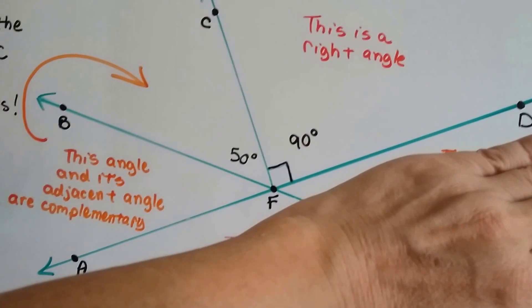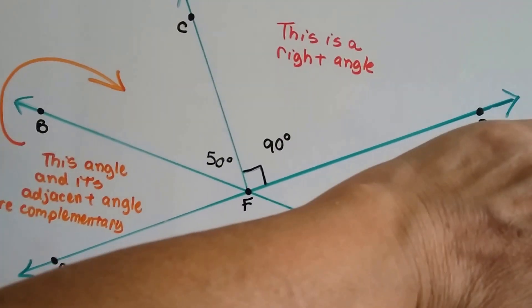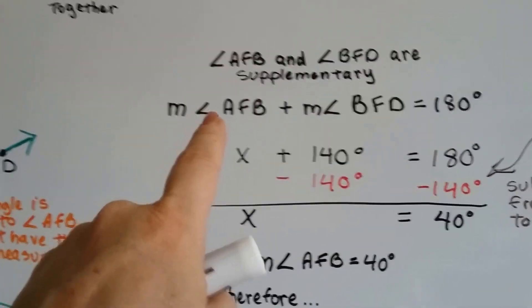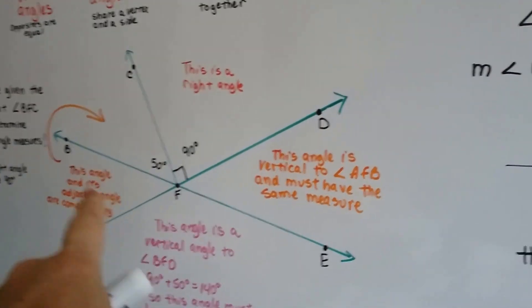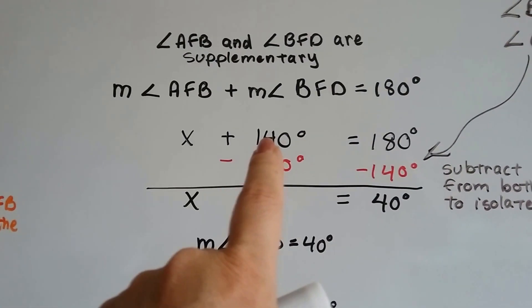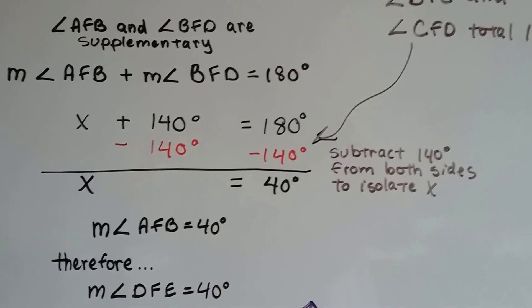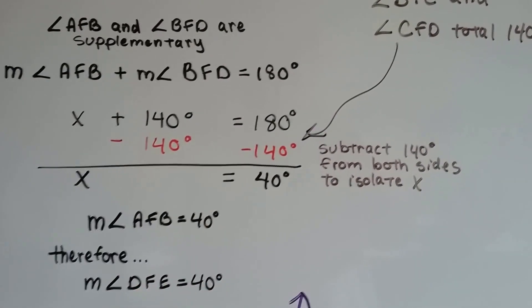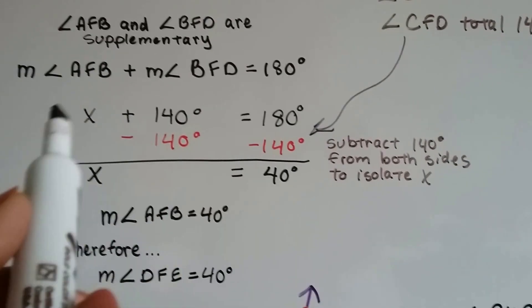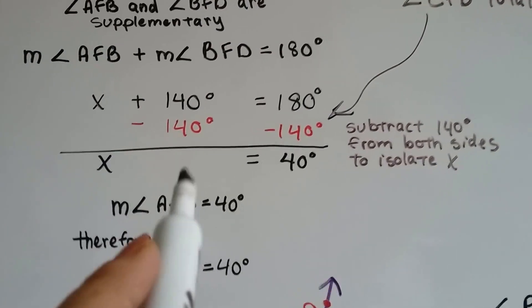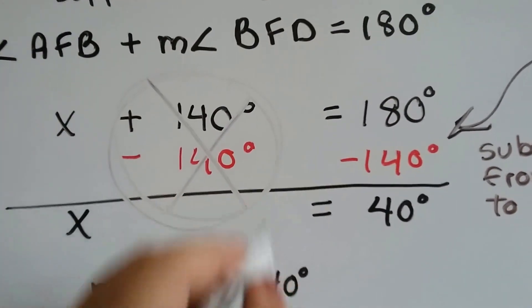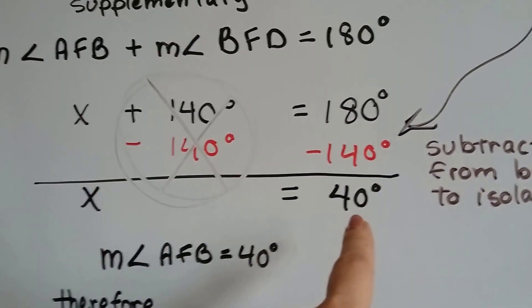Now, we also know that the missing measure of this one would make it total 180. So what we do is, we say the measure of AFB, that's the one that's missing, AFB, plus the 140 degrees equals 180 degrees. Because it would be supplementary then, right? So if we subtract 140 from both sides like we learned a few videos ago, that would isolate the x. This would create a zero pair, wouldn't it? And we'd eliminate it.